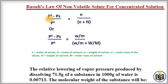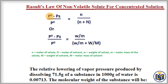Raoult's Law of non-volatile solute states that the relative lowering of vapor pressure of a solution — represented as (P° - Ps) / P° — is equal to the mole fraction of solute in the solution. P° is the vapor pressure of the pure solvent, Ps is the vapor pressure of the solution, and the mole fraction of solute is moles of solute divided by moles of solute plus moles of solvent.